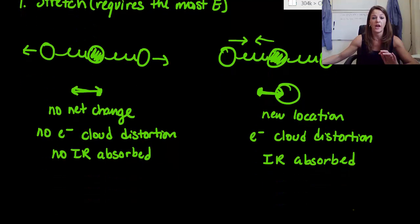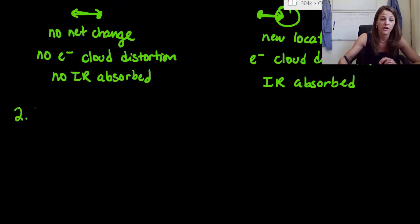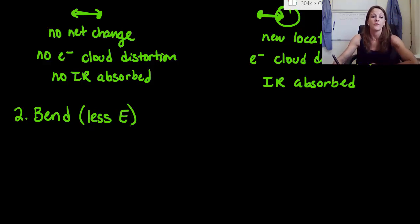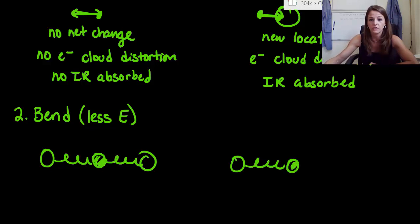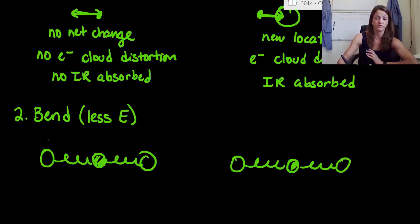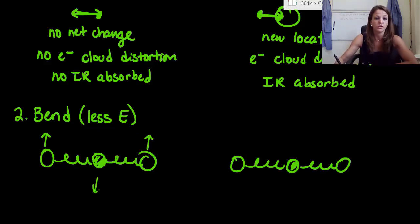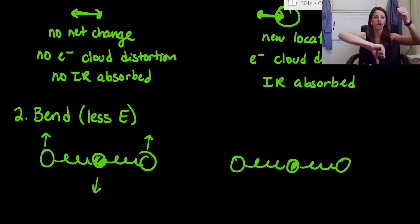Now let's talk about what happens with a bend. The other option is that we have a bend, which is something that requires less energy — it's much easier to do. For the first bend, we can draw this out: we have two oxygens connected to the springs with carbon, and we just say the two oxygens go up and the carbon goes down. So if this is my CO2 molecule, my oxygens go up and my carbon goes down.